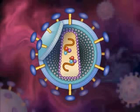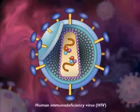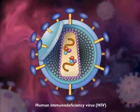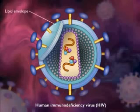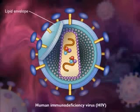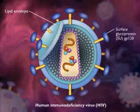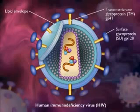AIDS is caused by the human immunodeficiency virus, HIV. This is an enveloped virus. The envelope is derived from the host cell membrane with viral glycoproteins such as GP120 and GP41 inserted into the membrane as the virus leaves the cell.